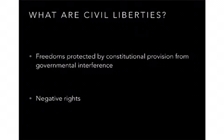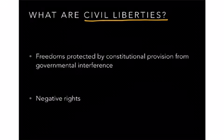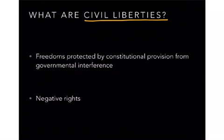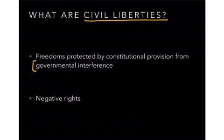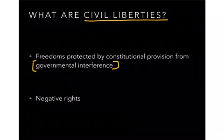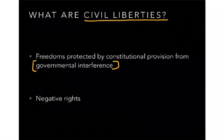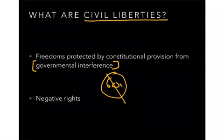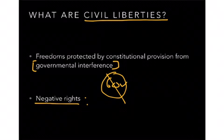So, what are civil liberties? What's this topic about? Civil liberties are one of the unique things that we get out of the Constitution. They are freedoms — things you get to do which are protected by constitutional provision. Specifically, what they're being protected from is governmental interference. In other words, these are things you can say no to — the government can't force you to do something. It's a big stop sign on potential government actions, and as a result, we call them negative rights because it's your ability to say no.